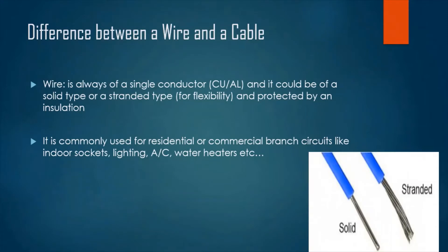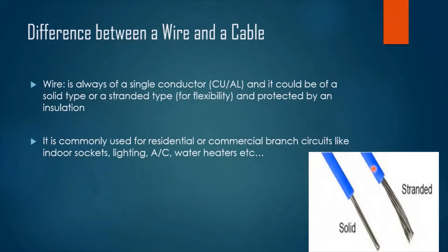First, let's have an idea about the difference between a wire and a cable. A wire is always of a single conductor, which could be copper or aluminum, and it could be of a solid type or stranded type, protected by an insulation layer. The wire has two layers: the conductor, which could be solid or stranded for more flexibility, and the insulation layer, which is always PVC. We mainly use wire for connecting branch circuits that do not consume high loads, like sockets, lights, air conditioners, water heaters, and other low-load appliances.